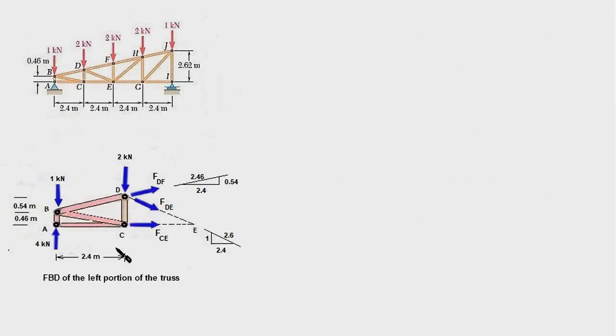This is the left part of the truss which we obtain when we pass a section like this. This diagram is a little magnified so that we can clearly see the direction of the various forces. Note that forces FDF, FDE, and FCE are now the external forces for this system. This is the reaction force AY. This is the external load which is here. This is the external load of 2 kN at point D.